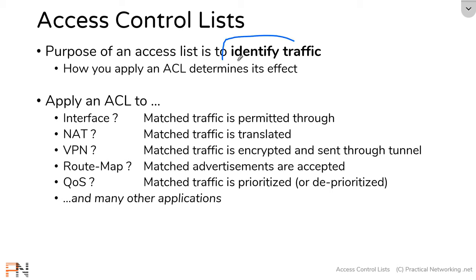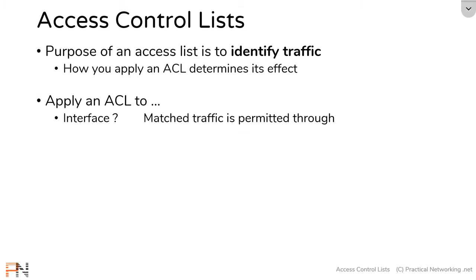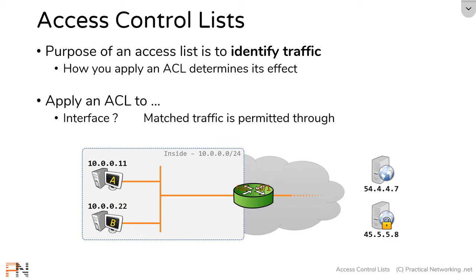Again, an ACL is simply a tool on a Cisco router used to identify traffic. For the purpose of this video series, we're going to be focusing on access lists applied to interfaces, because this is the most common use for an access list. We'll be using this topology to talk through the various concepts. Our topology features a router in between the inside segment and the internet.